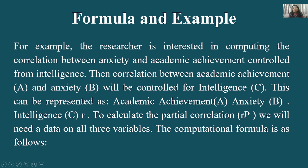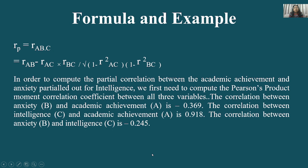To calculate the partial correlation R, we need data on all three variables. The computational formula is: R_AB.C = (R_AB − R_AC × R_BC) / √[(1 − R²_AC)(1 − R²_BC)]. You must memorize this formula. In an exam question, values of R_AB, R_AC, and R_BC will be given, and you simply substitute into the formula to find R_AB.C.